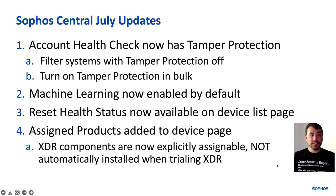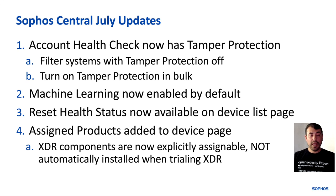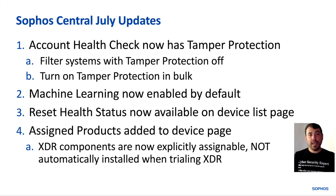First up, tamper protection is now available inside the account health check, so you'll be able to see if you've got tamper protection turned on or if it's turned off anywhere throughout the estate. As a subset to that, we now have filters in your devices view so that you can filter on any systems that do not have tamper protection on. And further to that, once you've selected those systems, you can actually go ahead and enable it in bulk.